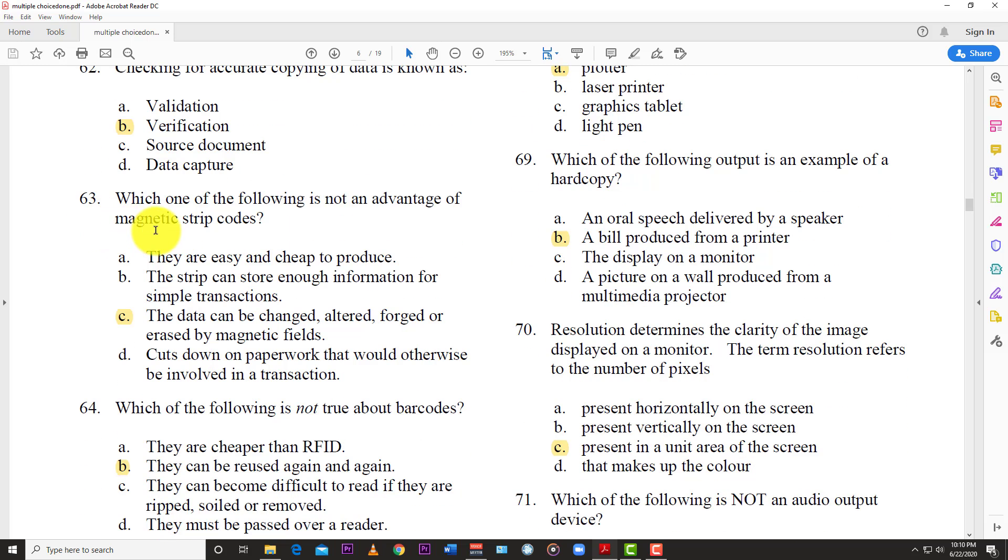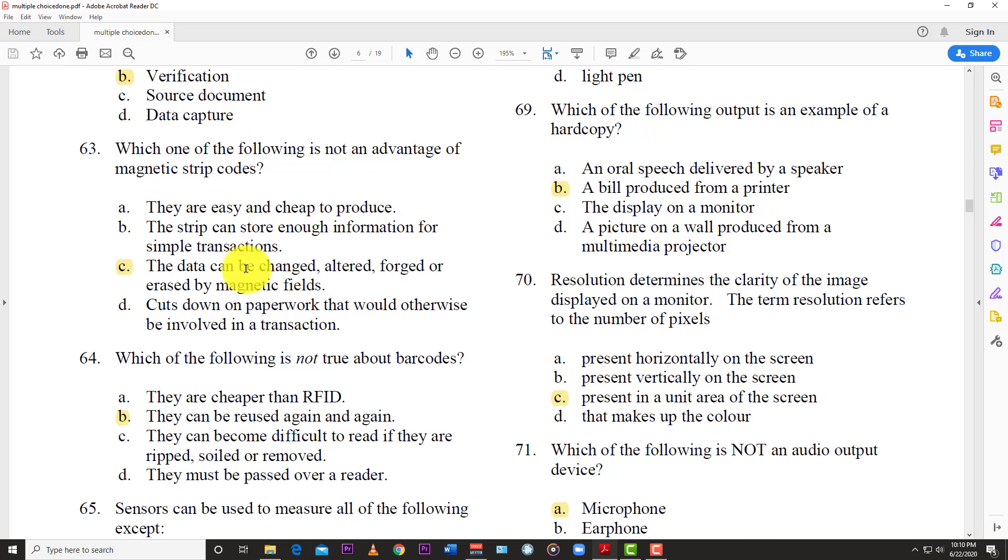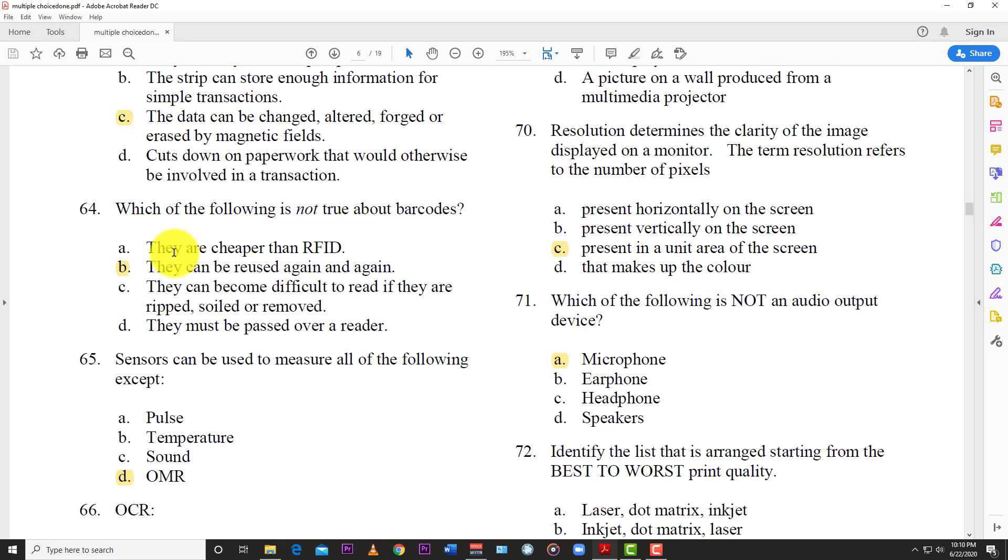Question 63: Which of the following is not an advantage of magnetic strip codes? And so the answer is C, the data can be changed, altered, forged, or erased by magnetic fields. Question 64: Which of the following is not true about barcodes? And the answer is B, they can be reused again and again.